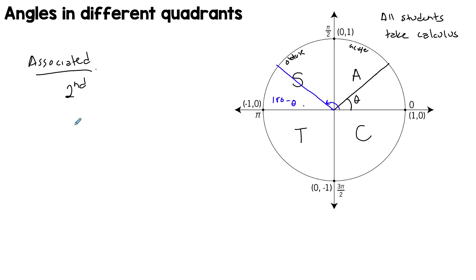What if you want the associated angle in the third quadrant? What you're going to do is take 180 plus your θ. So this will be this angle. Again, these two, this green angle and this θ have similar properties.